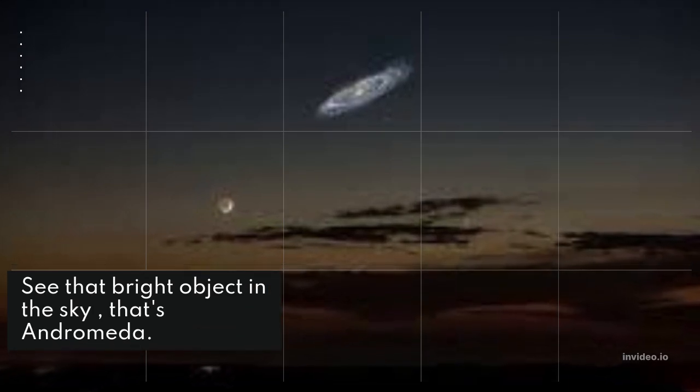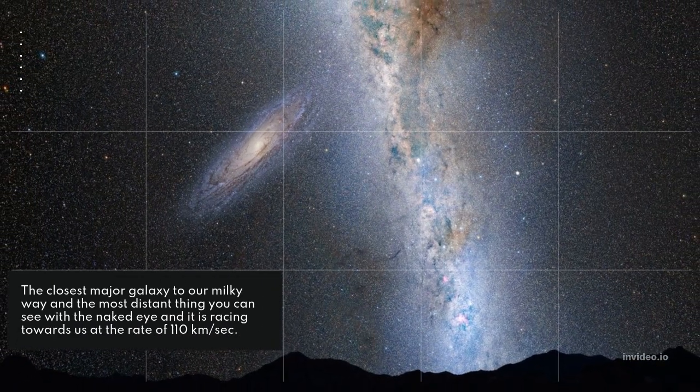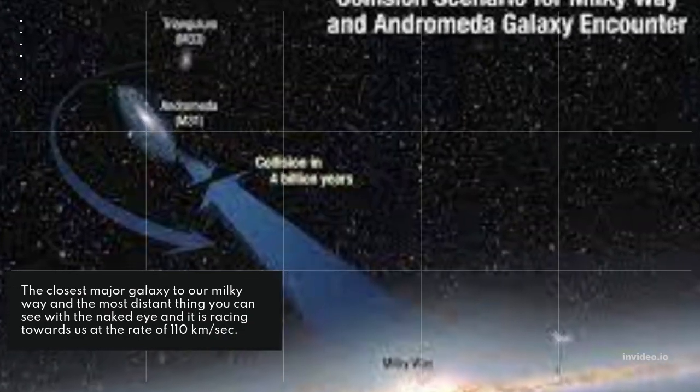See that bright object in the sky? That's Andromeda, the closest major galaxy to our Milky Way and the most distant thing you can see with the naked eye. It is racing towards us at a rate of 110 kilometers per second.